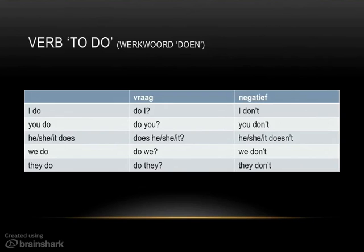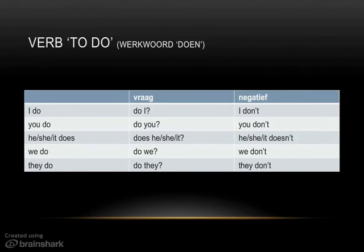If you want to use the verb to do to make a question, then you just put the verb at the start of the sentence: Do I? Do you? Does it? Do we? Do they? If you want to make it negative, you can say I do not, or I don't. You do not, or you don't. He, she, or it does not, or doesn't. We don't, and they don't. Does is only used with the he, she, and it form - otherwise it's always do or don't.